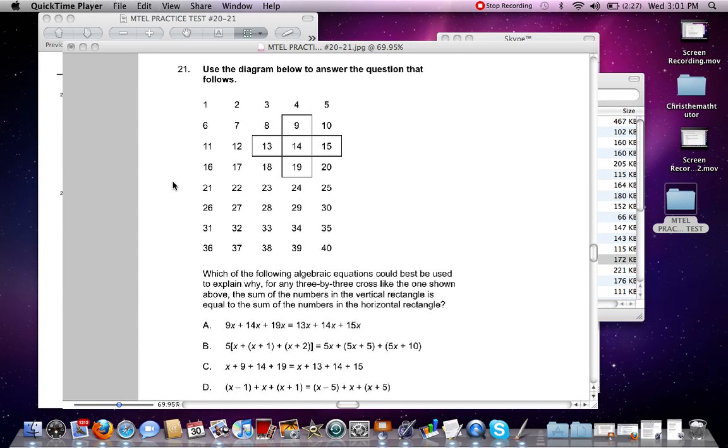Number 21. Use the diagram below to answer the question that follows. Which of the following algebraic equations could best be used to explain why, for any 3 by 3 cross like the one shown above, the sum of the numbers in the vertical rectangle is equal to the sum of the numbers in the horizontal rectangle?